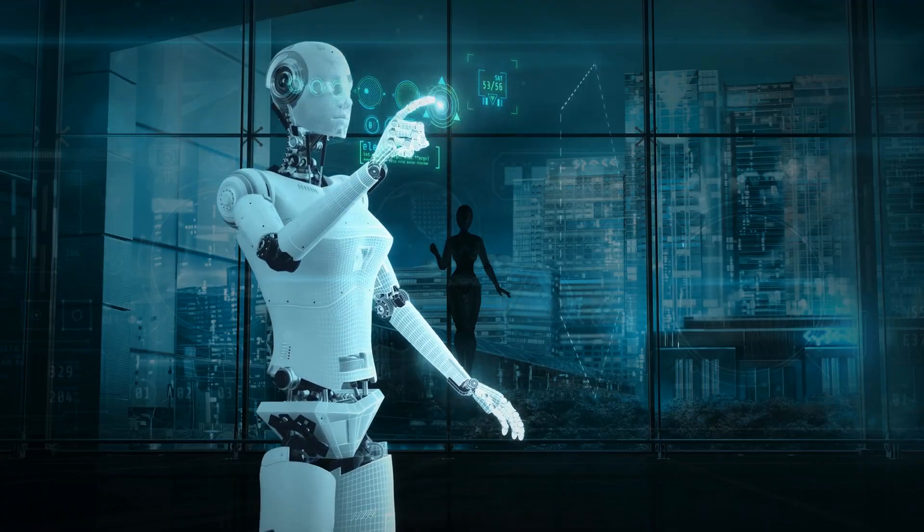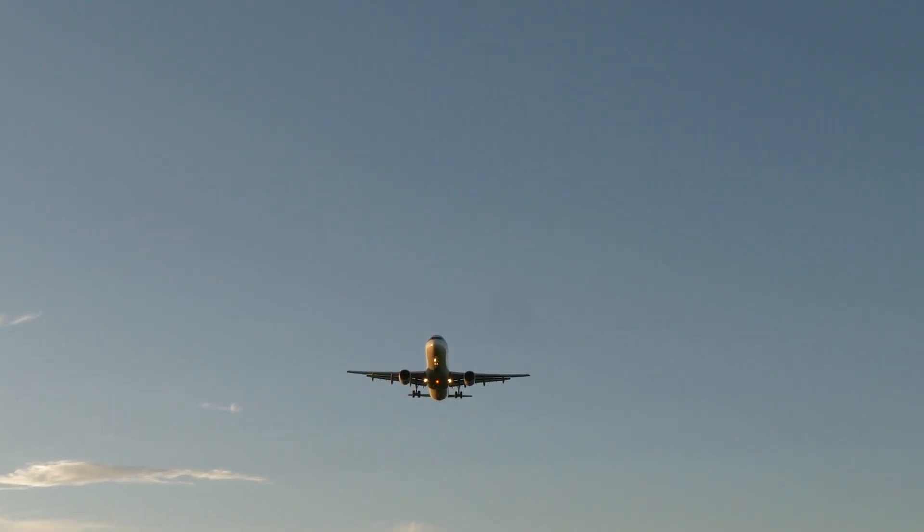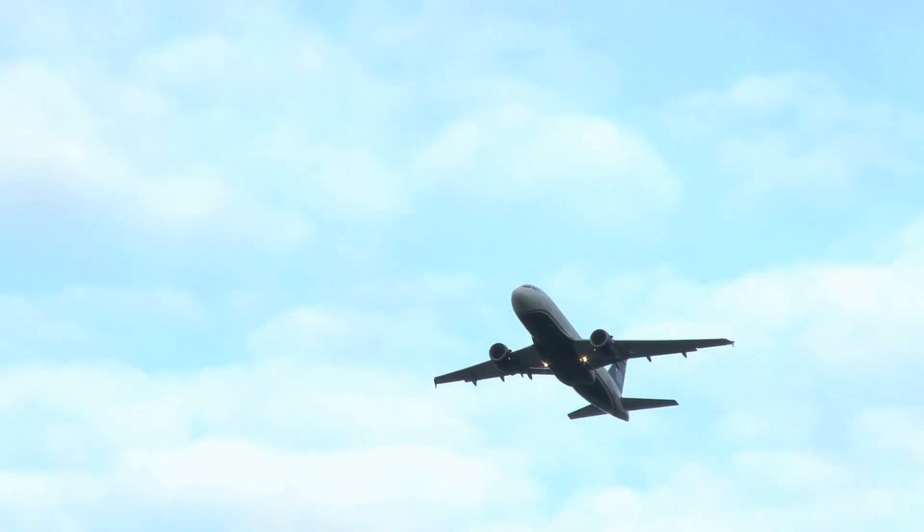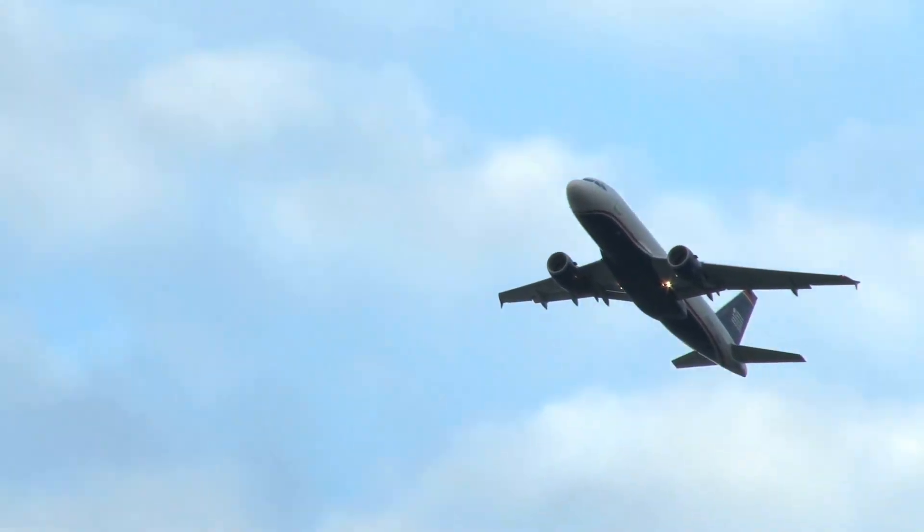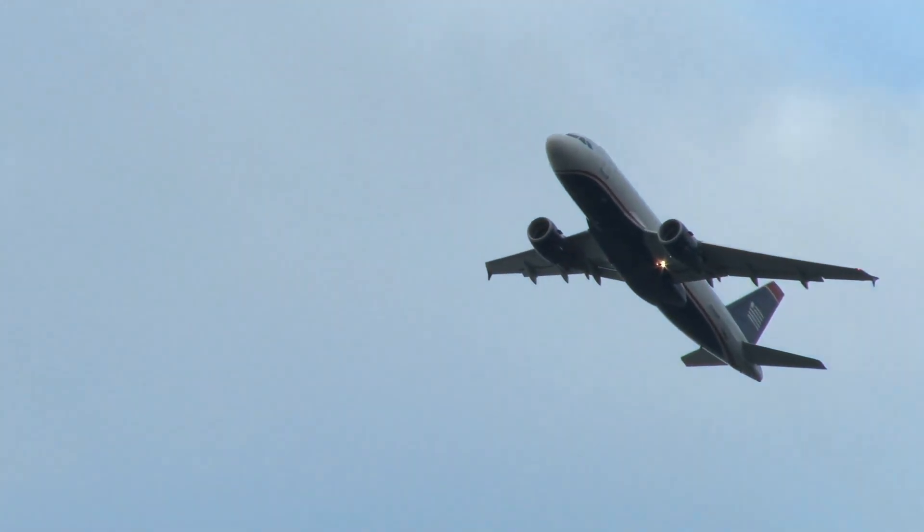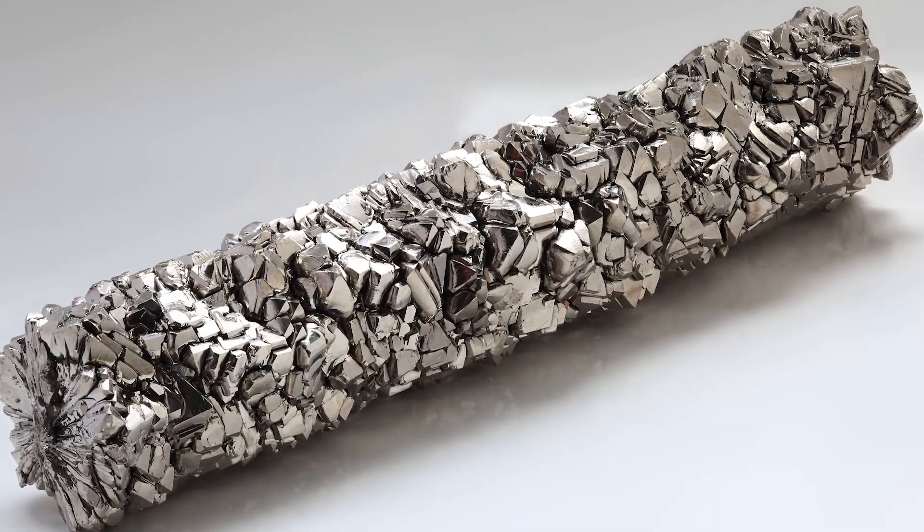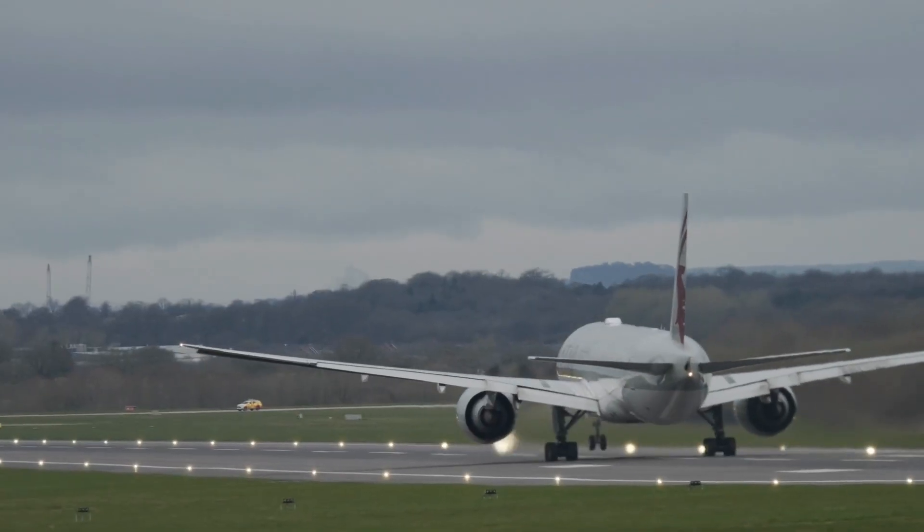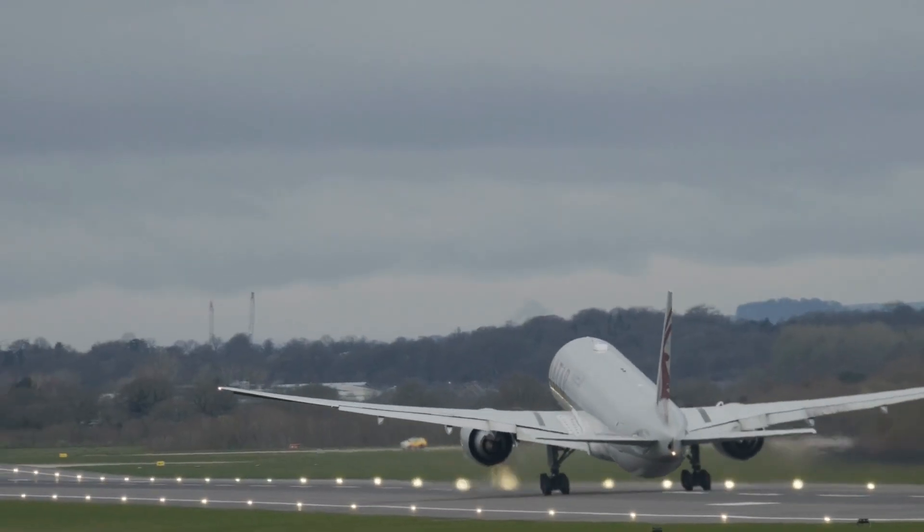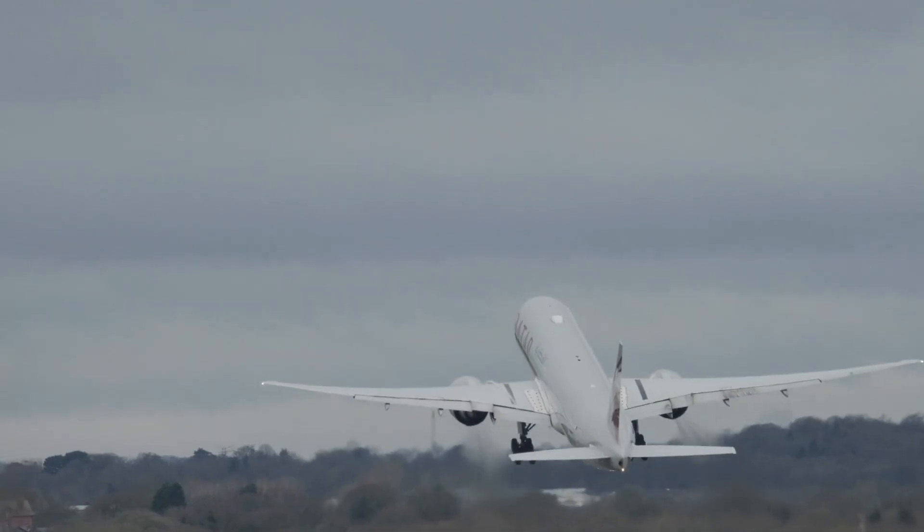In aerospace, every kilogram counts. Lighter planes mean less fuel, less cost, and longer ranges. But now we've got something five times stronger than titanium and way lighter. Imagine aircraft parts made from this nano lattice—we're talking about saving up to 80 liters of fuel per kilogram per year.